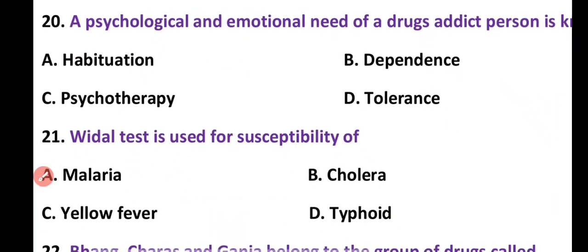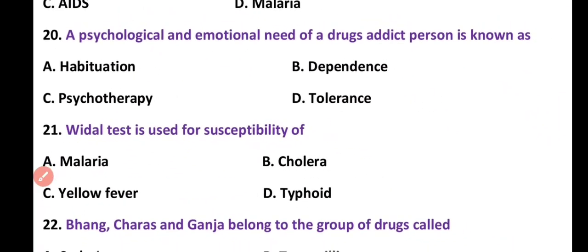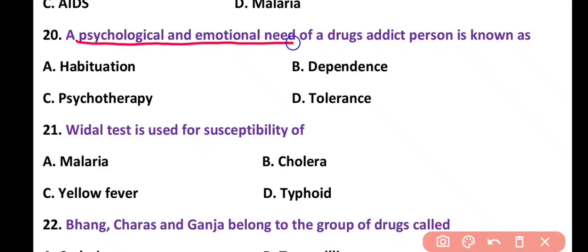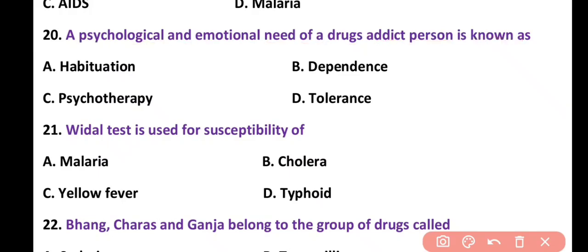Question 20. A psychological and emotional need of a drug addict person is known as: habituation, dependence, psychotherapy, or tolerance. Correct answer is option B. Psychological and emotional need of a drug addict person is known as dependence on the drug.